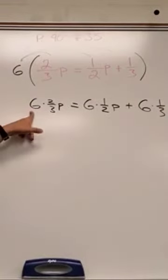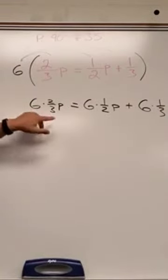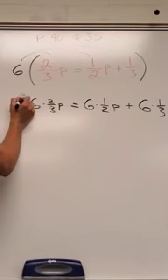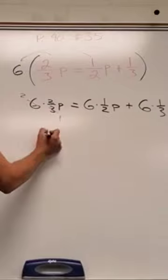Okay, let's do the math now. 6 times 2/3, well, 6 and 3 can do a little cross-cancel there. That's 2 times 2 on the top, which is 4p.